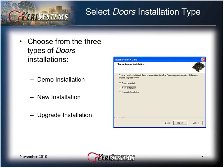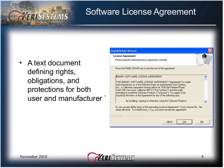Choose from the three types of DOORS installations. For a new installation, select the radio button next to New Installation, and then click Next. The software license agreement will appear. This is a text document defining the rights, obligations, and protection for both the user and the manufacturer. You must accept the license agreement to continue the installation. Click Yes to accept the license agreement.